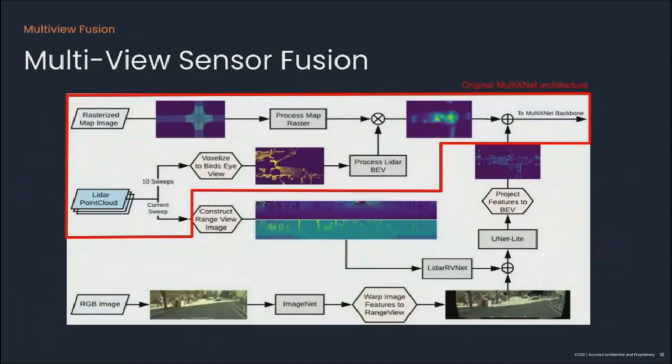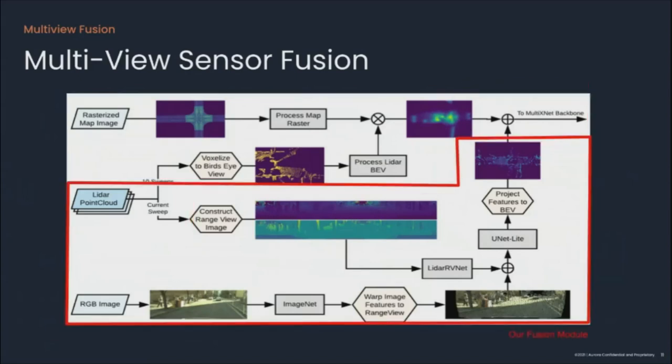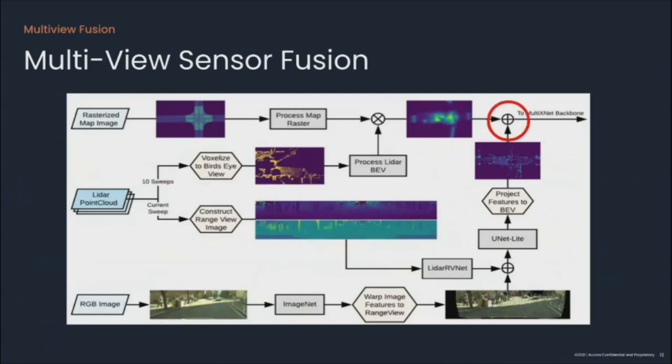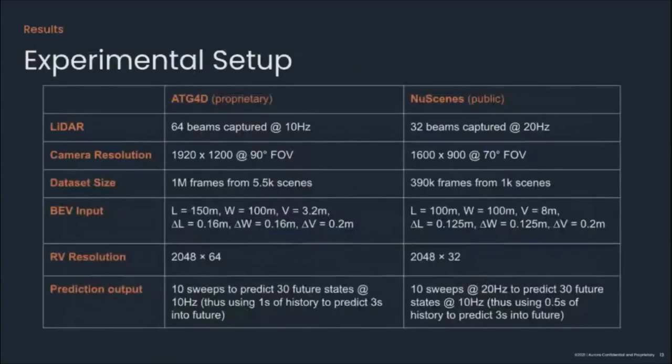This is what our final architecture looks like, which we refer to as LIDAR Camera Multi-View, or LC-MV for short. The core architecture marked in red is borrowed from MultiXNet, augmented with our fusion method. The final features from our fusion module are then concatenated with the BEV features processed from the LIDAR and raster map, and these fused features are fed to the MultiXNet backbone for detection and prediction tasks.